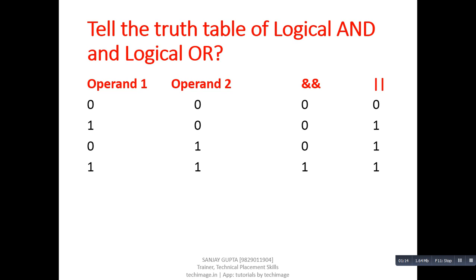To conclude: if all the conditions or operands are true, then logical AND will be true, otherwise false. And if at least one of the operands is true, then logical OR will be true, otherwise it will be false.